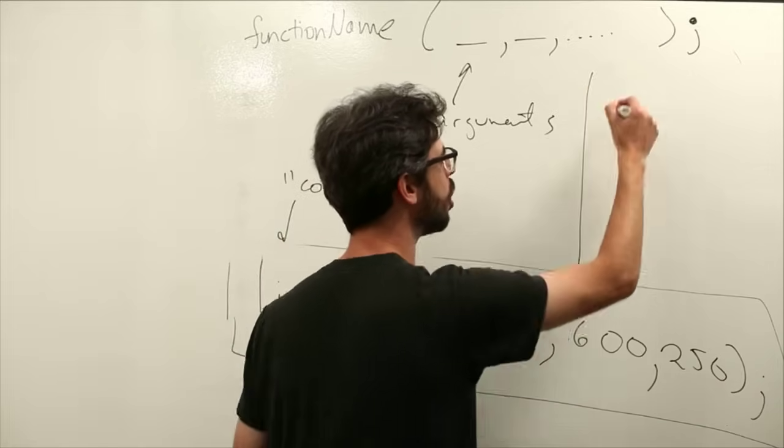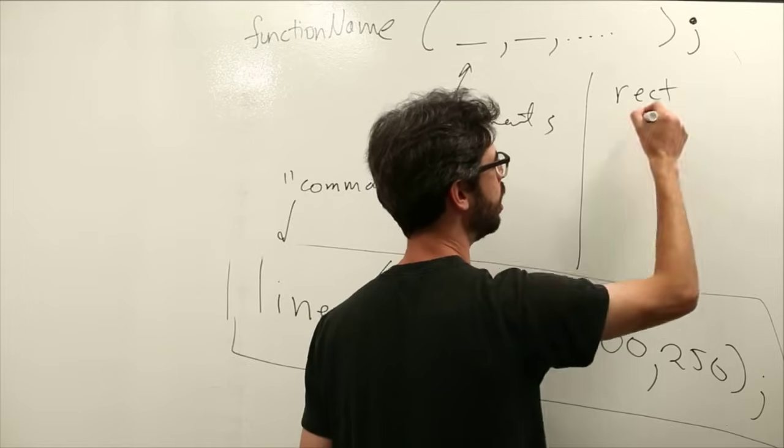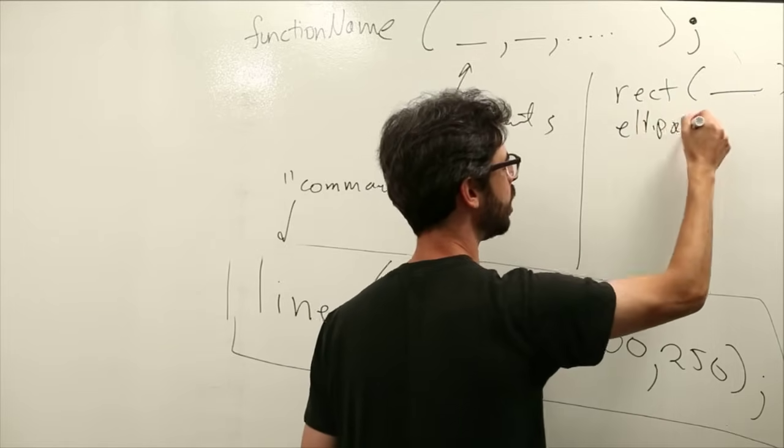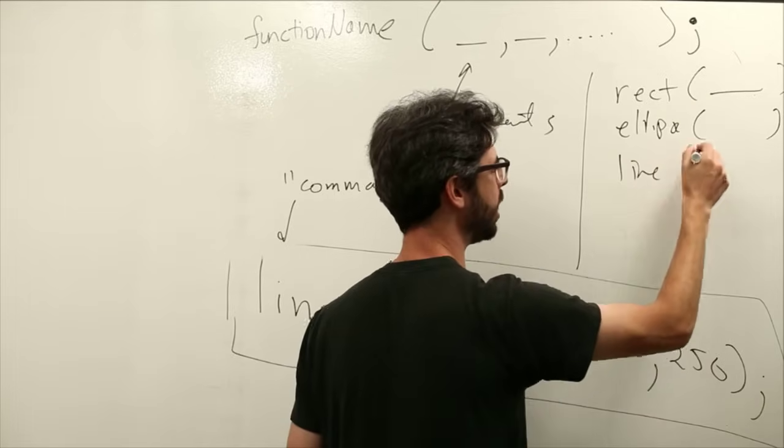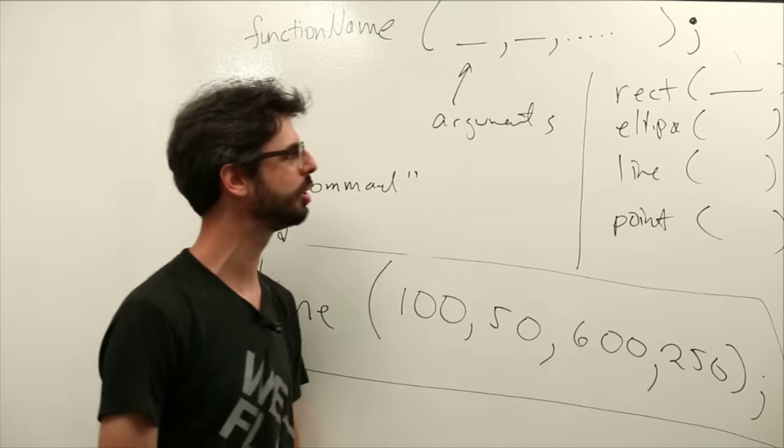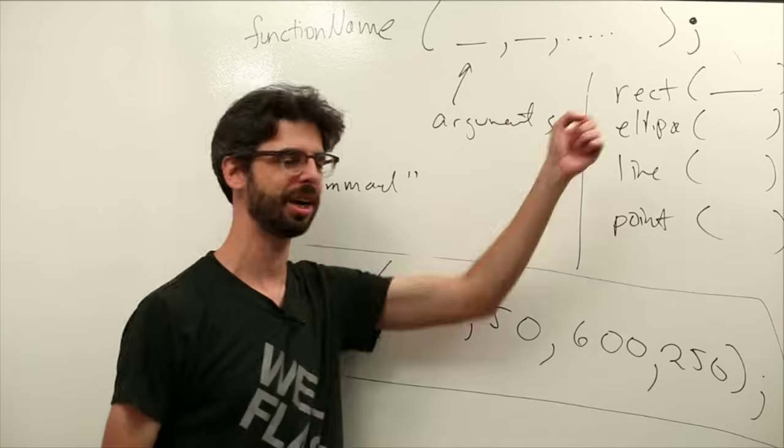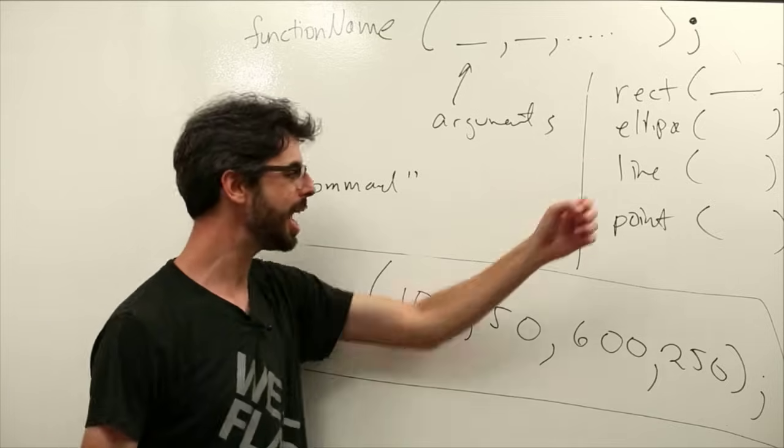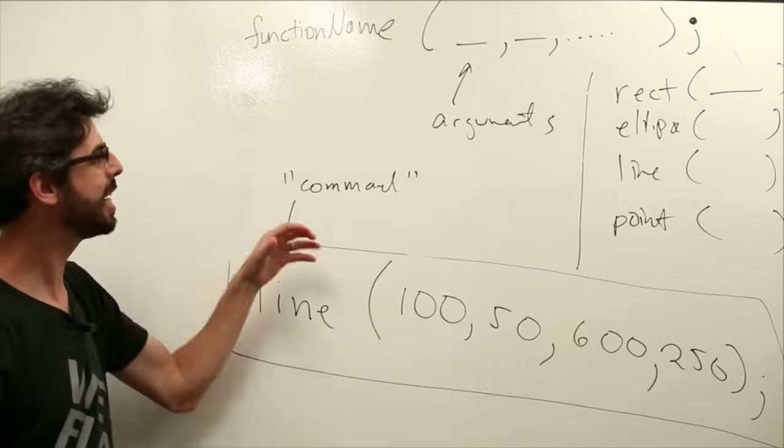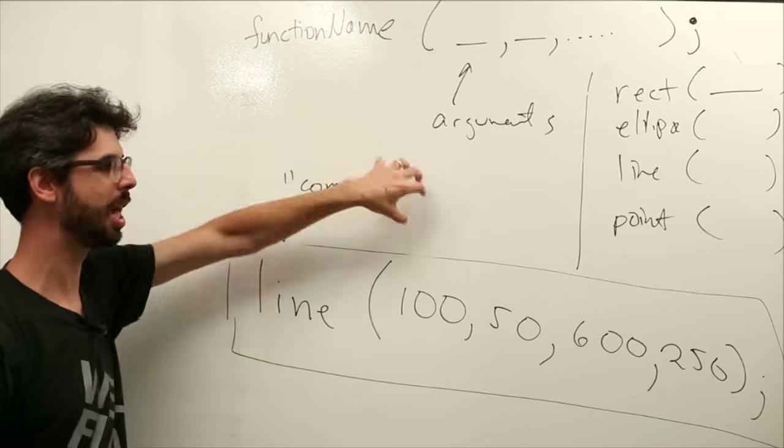Everything we write, the first ones we're going to learn are like rectangle, ellipse, line, and point. How do we define a rectangle? How do we define an ellipse? How do we define a line? How do we define a point? What are the arguments for each one of those? We can then draw rectangles, ellipses, lines, points.